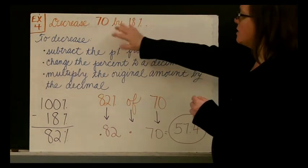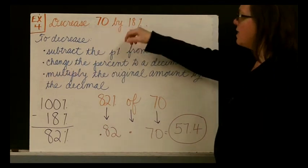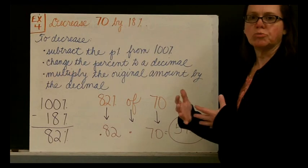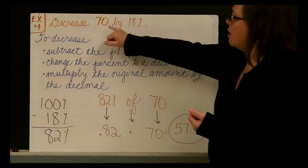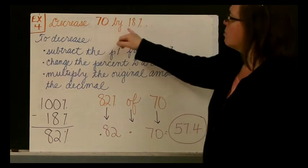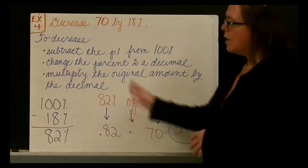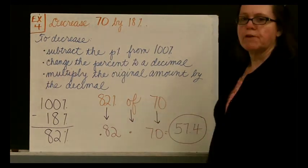And I hope that you have grasped the reasoning of this. If we are decreasing this number, 70, by 18%, then what we're doing is finding the 82%. You could do it a longer way by first multiplying your original number by your percent of change and then subtracting that from the whole, but I think this is a little bit easier to follow.